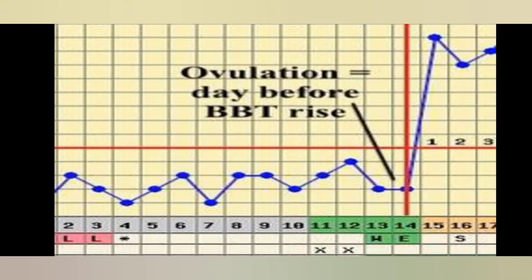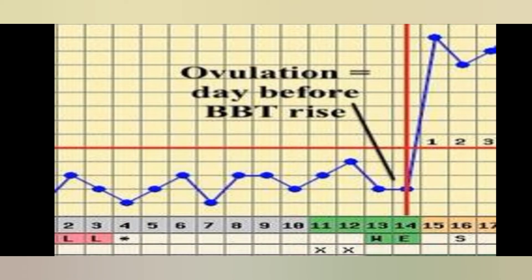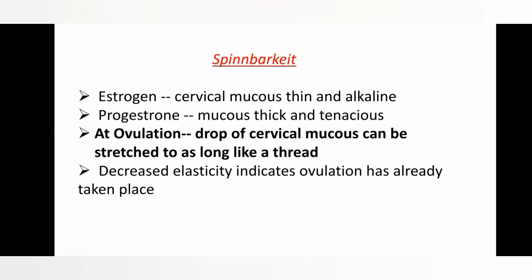This graph represents the variation of basal body temperature during the menstrual cycle. The x-axis represents the number of days and the y-axis represents the basal body temperature. From day 2 to day 13 there is only a slight variation, but on the 14th day there is a marked elevation of basal body temperature due to increased secretion of progesterone, which has a thermogenic effect.